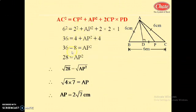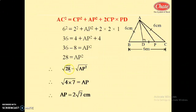So AP squared equals 28 and square root of 28 equals square root of 4 into 7, giving AP equals 2 root 7 centimeters. Thank you.